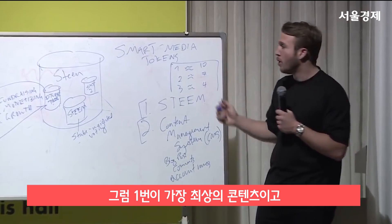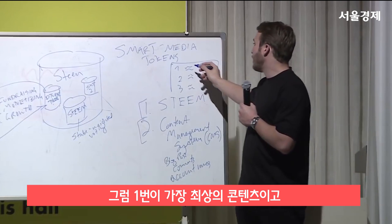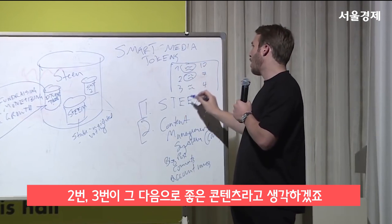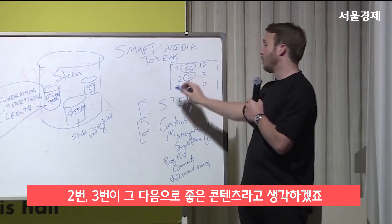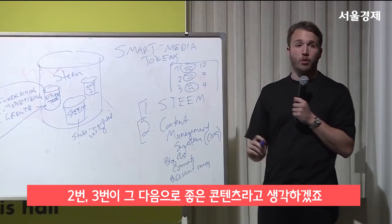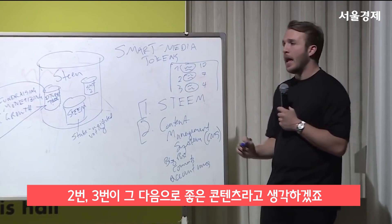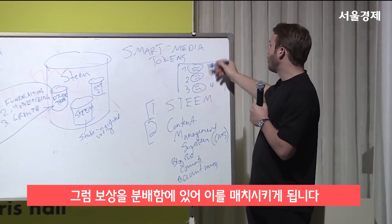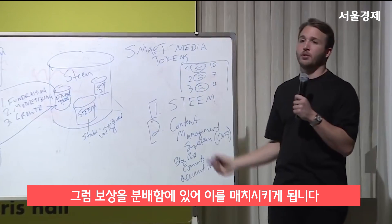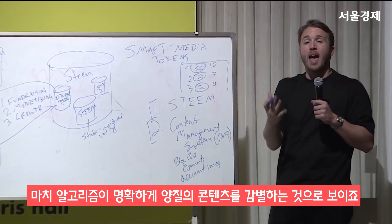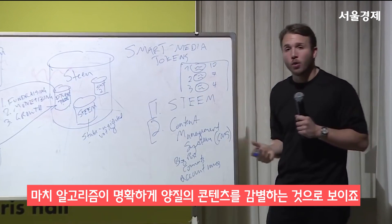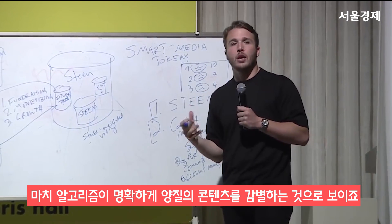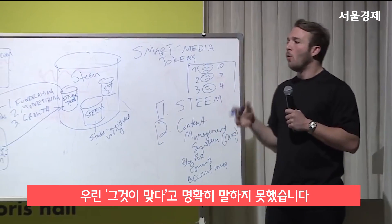So if you saw three articles — the first one was paid 10 Steem, the next was paid 7, and the next was paid 4 — you would hope that people would read them and say yes, this is definitely the most high quality, this is the second highest quality, and this is the least quality of all three. And if their perception matches up with how rewards were distributed, that means you have an algorithm that truly seems to be identifying good content.